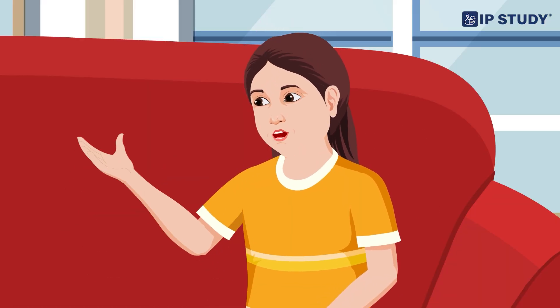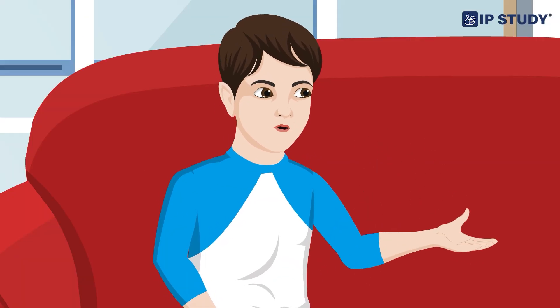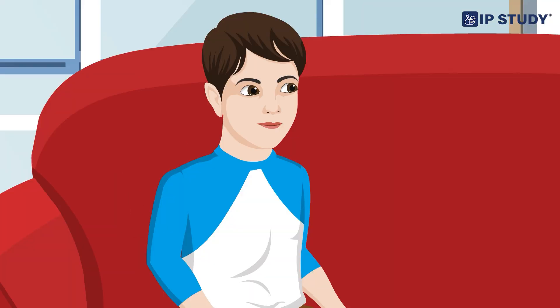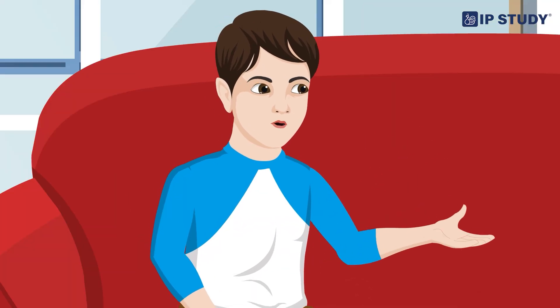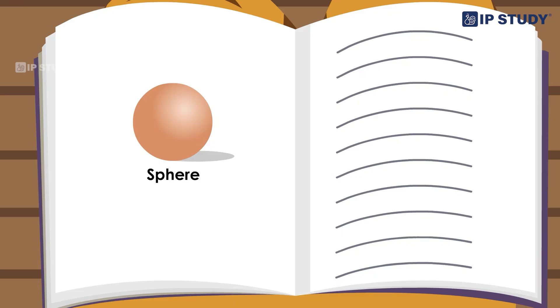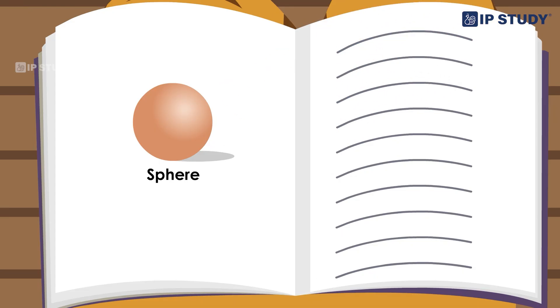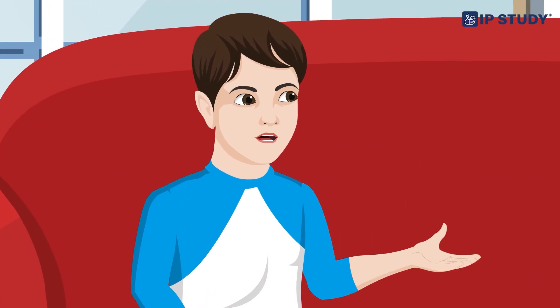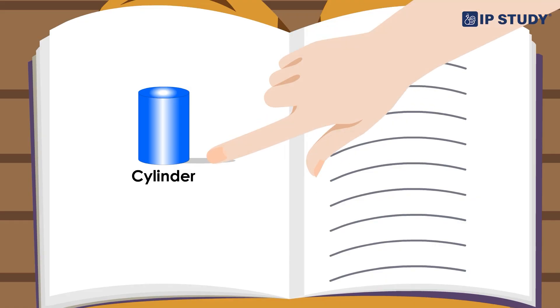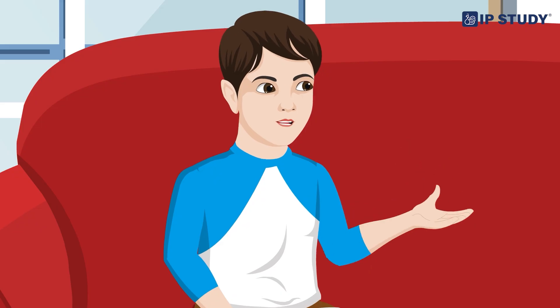Now let's look at other shapes. Sure, Urvashi, this is interesting. Do you know what solid shapes are? No, I don't. Amal, this shape is known as a sphere — it looks like a ball. Yes, it certainly looks like a ball. This is a cylinder — it looks like a drum. Oh, I got it!